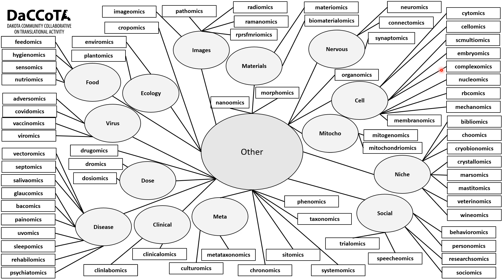Under viruses: viromics (viral genomes), vaccinomics (vaccines), COVIDomics (COVID-19), and adversomics (adverse vaccine reactions). Under food: nutriomics (food and nutrition on health), sensomics (sensory properties of food at the molecular level, such as odor — a subset of foodomics), hygienomics (hygiene and food safety), and feedomics (food given to animals).